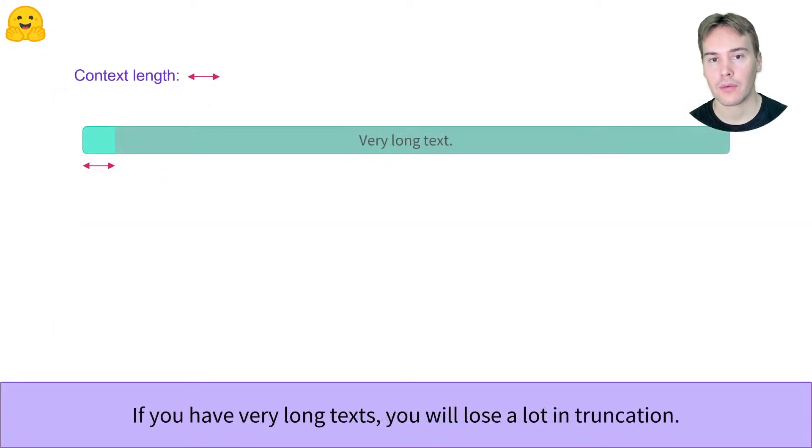This will, however, make us lose a lot of text if the examples in our dataset are very long compared to the context lengths we've picked. Here, all the portion in gray is lost.